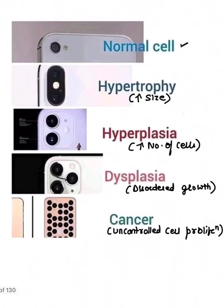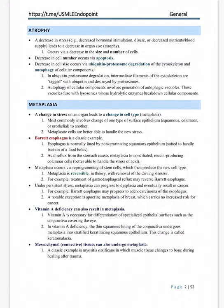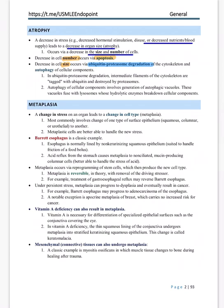Atrophy is basically when you don't use something — organ size decreases due to decrease in size and number. Decrease in number is due to apoptosis, and the important MCQ: decrease in size occurs due to the ubiquitin-proteasome pathway.